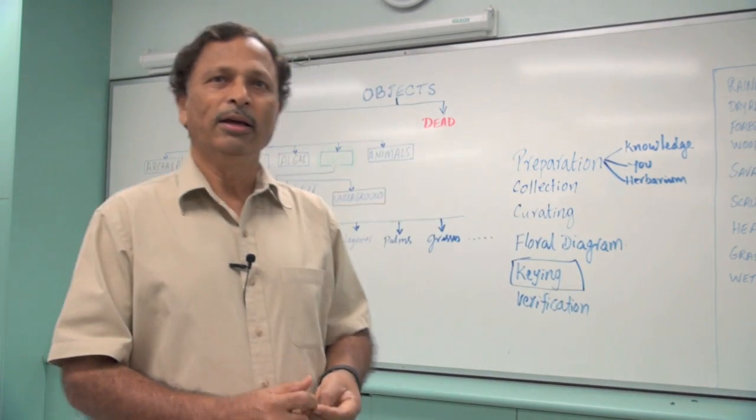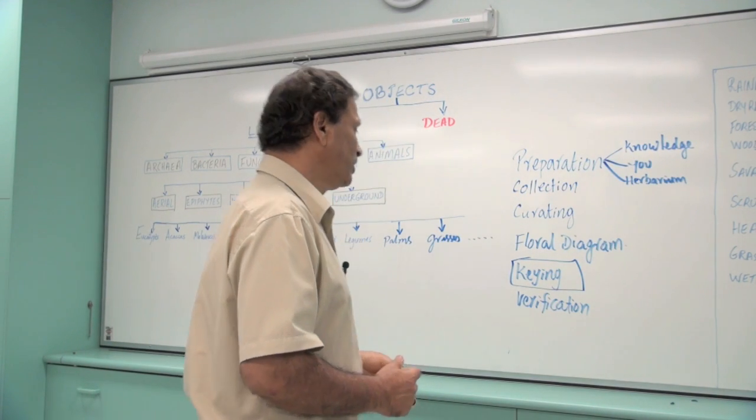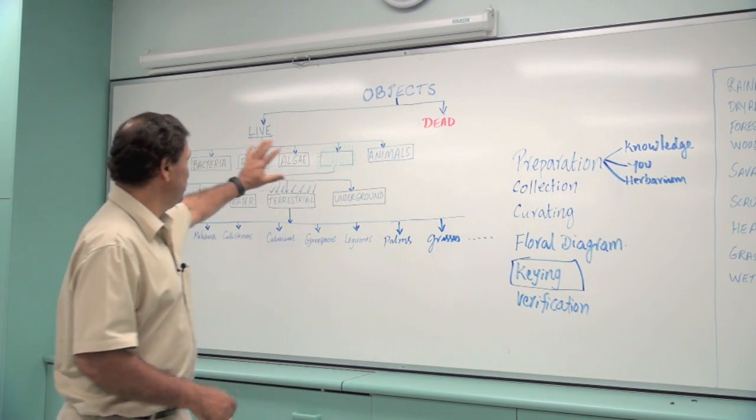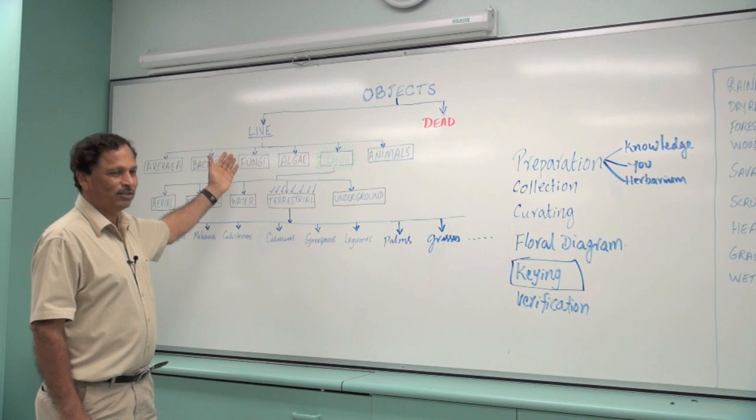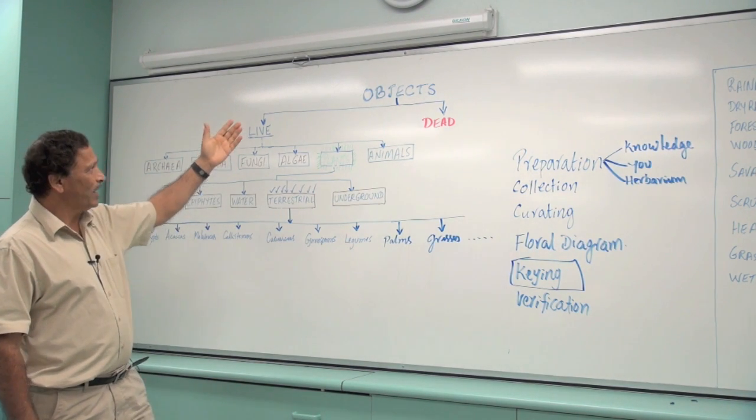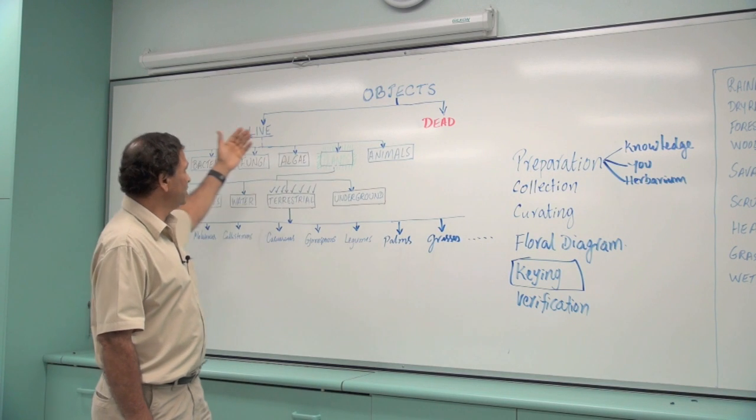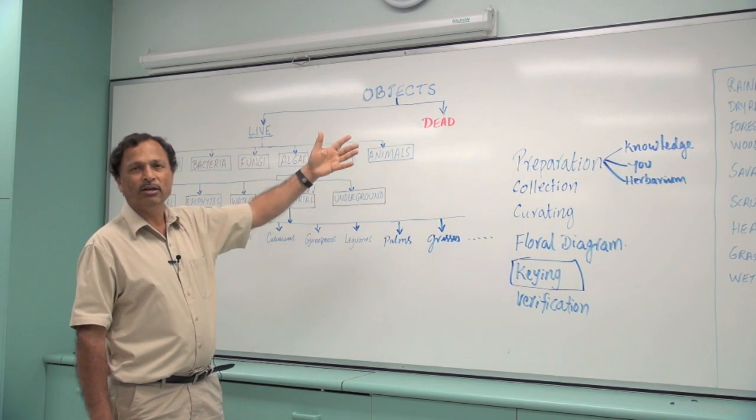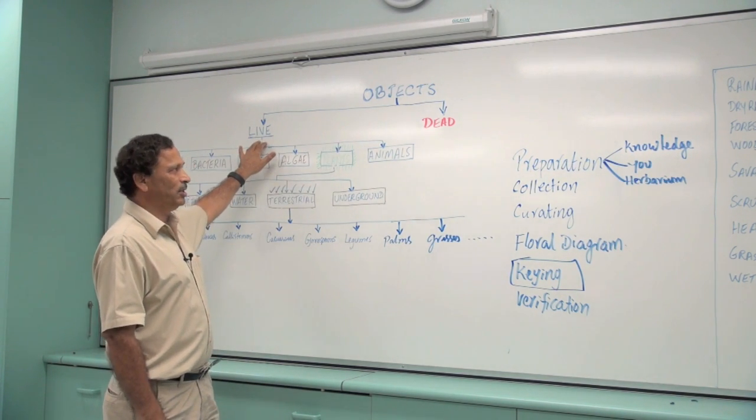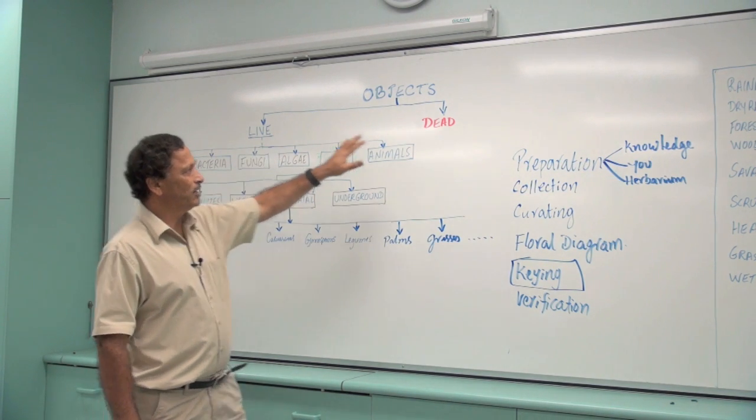Firstly, when you talk about plants, plants fit into this larger scheme of classification, and any object that you come across can be classified into two categories: the live materials or objects and the dead objects.